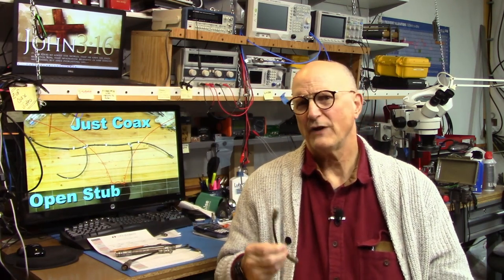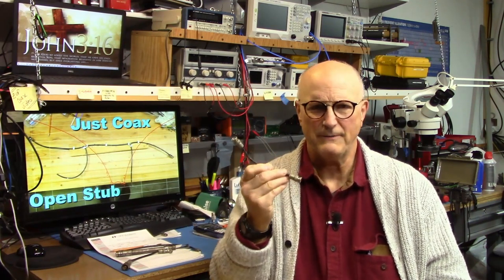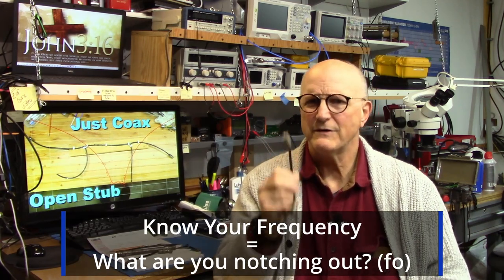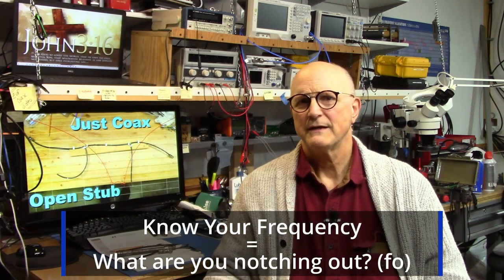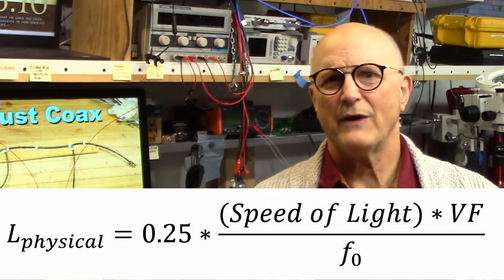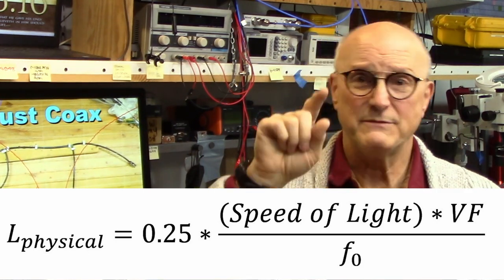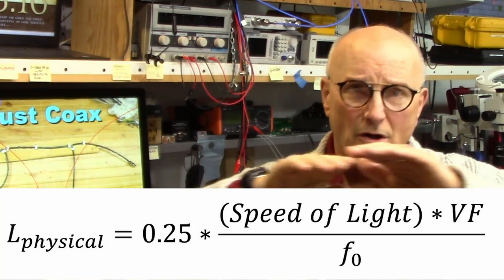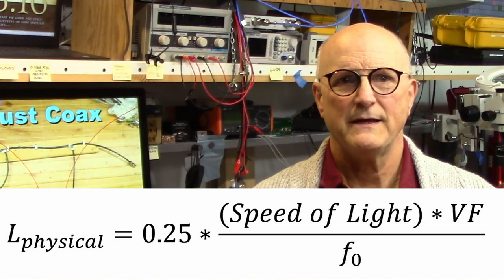This velocity factor must include everything associated with the stubs — the connectors, the adapters, everything. The next step is to determine the specific frequency that you want to notch out using this band reject filter. Let's call this F sub 0. The design all revolves around one-quarter wavelengths of coax. To calculate these lengths, we use this very simple formula: the physical length of our coax is equal to 0.25 times the speed of light times the velocity factor of our coax, all divided by the frequency we're interested in. The speed of light in free space needs to be in whatever units make sense for you. I've provided the value of the speed of light in inches per second and centimeters per second in the description.